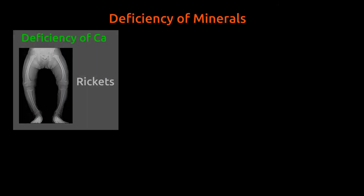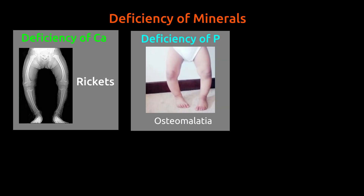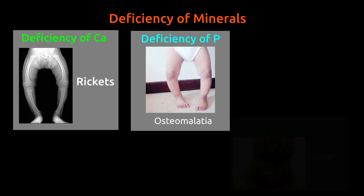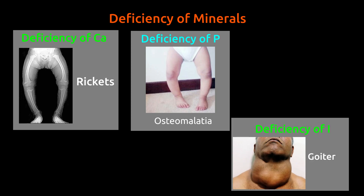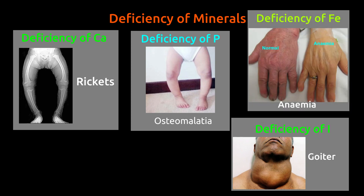Deficiency of the mineral calcium leads to rickets, which makes bones weak. Osteomalacia is caused by deficiency of phosphorus, which makes bones softer. Iodine is useful in thyroid secretion, and a deficiency leads to goiter in adults. Iron is an important constituent of blood, and its deficiency leads to anemia.